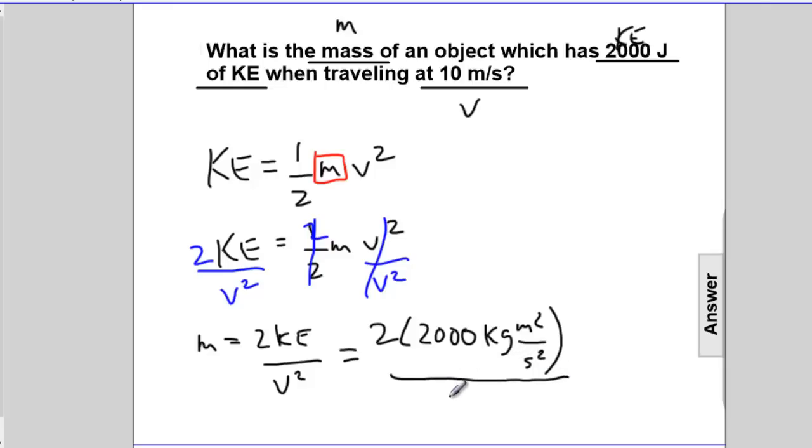10 times 10 is 100. And we get m²/s² when we square velocity. Meters squared will cancel meters squared. Second squared cancels second squared. 2 times 2,000 is 4,000 divided by 100.